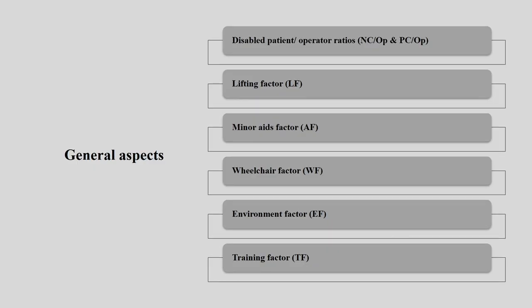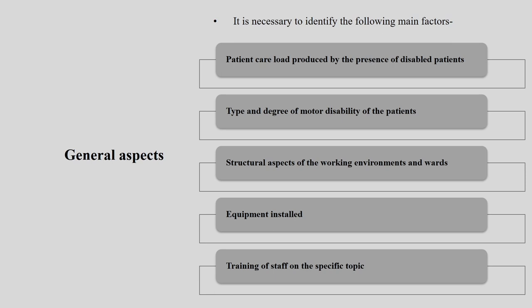If somebody is trained enough, there is less chance of difficulties faced by the person. If he or she is not trained to handle patients, they are going to have a lot of trouble. Training factor is very important in case of MAPO. In total, we have 6 factors. We need to also identify: patient care load produced by the presence of disabled patients, type and degree of motor disability of that particular patient, structural aspects of the working environment and wards, equipment installed within that particular sector, and training of the staff on that specific topic.